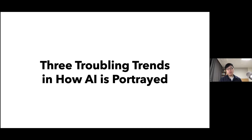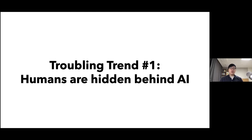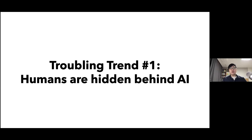I want to summarize what I've been saying in three troubling trends in how AI is portrayed by media and in our general perception. The first troubling trend is that humans are often hidden behind AI. When companies and technologies talk about how things could be automatically done, it's not actually fully automated — a lot of human effort goes into it, but much of that gets ignored for various reasons.